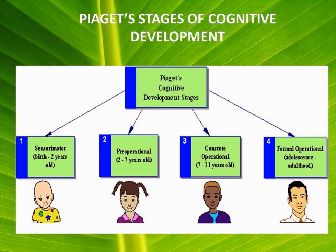Quick revision — Piaget's Stage of Cognitive Development: 1) Sensorimotor: birth to 2 years; 2) Pre-operational: 2 to 7 years; 3) Concrete operational: 7 to 11 years; 4) Formal operational: 11 to 15 years.